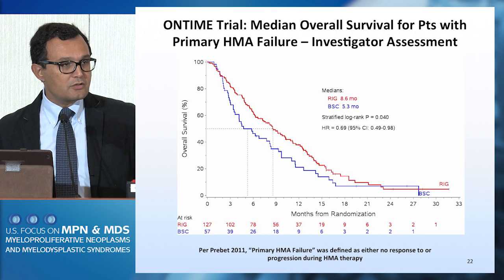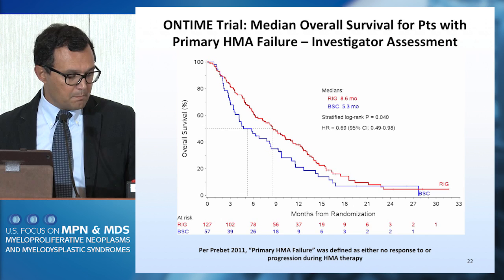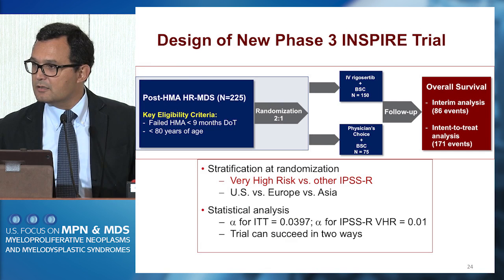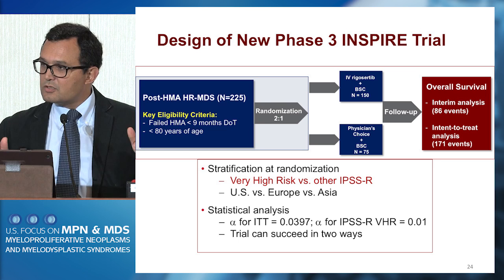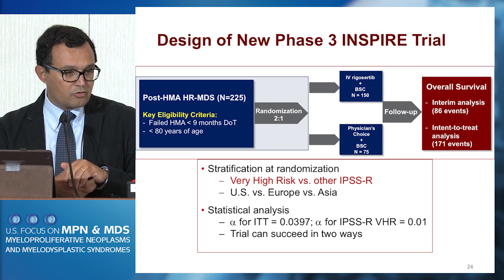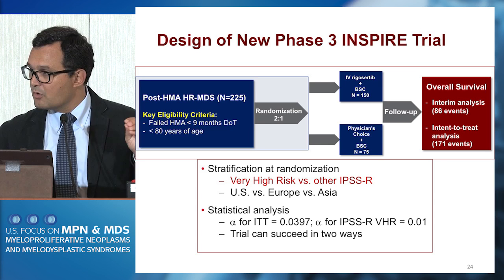Based on that, there is now a second study open worldwide called INSPIRE — a phase three trial open in many centers in the United States, focusing on the group of patients that appeared to have the most benefit from the original ON910 trial. The first study accrued very fast because basically you could enroll anybody with failure. This is more restrictive, so it's going a little bit slowly, and we'll see what this data shows in a few years.